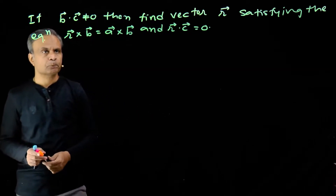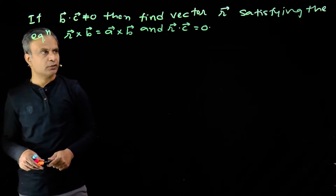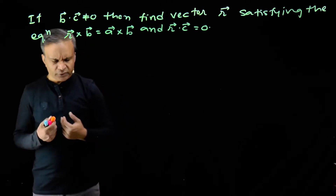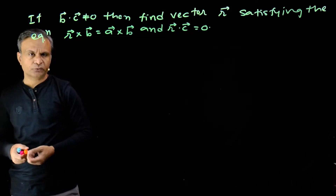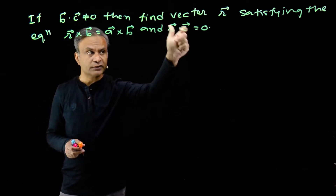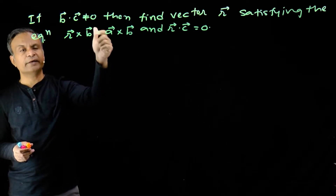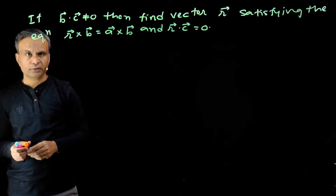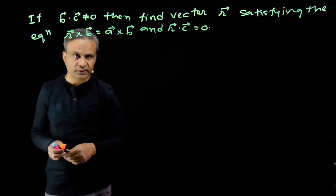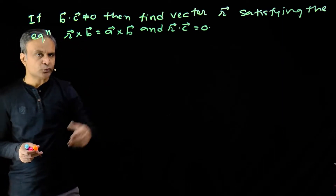Equation is r cross b is equal to a cross b. Also, r dot c is equal to 0 — this is also given. How can we use vector triple product here? The value of r dot c is equal to 0, so we take cross product with vector c. The reason is we want to use r dot c is equal to 0. If we cross with c, then we will have a term containing r dot c, and we can use r dot c.